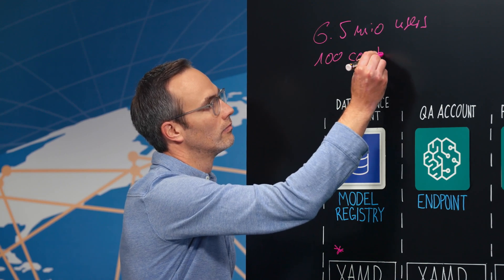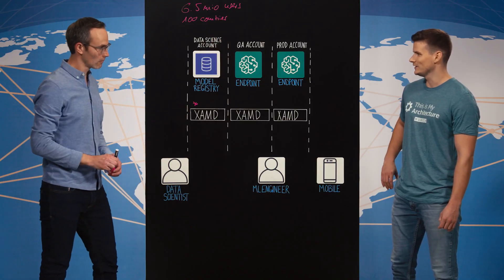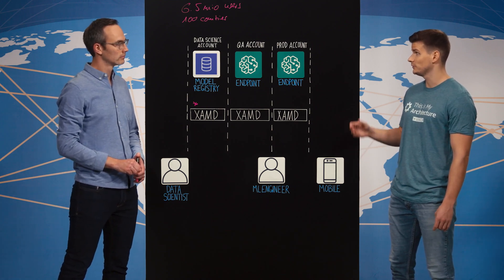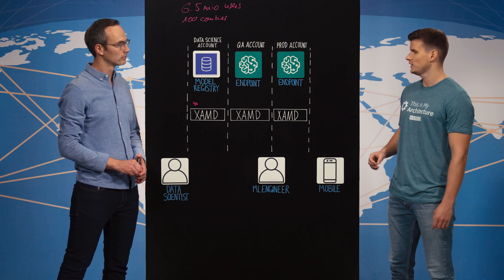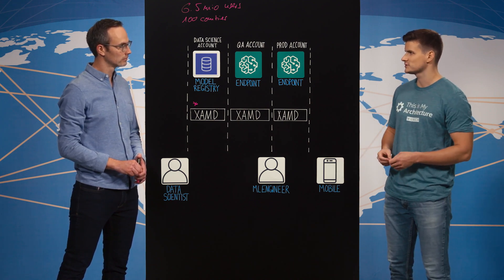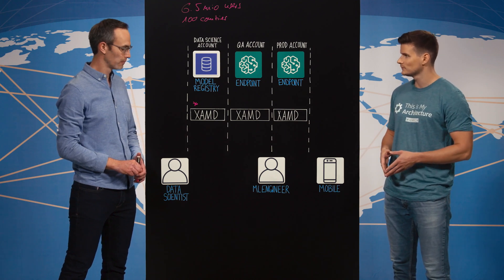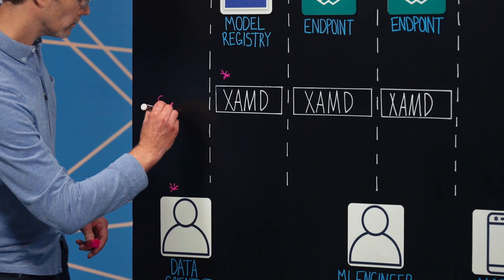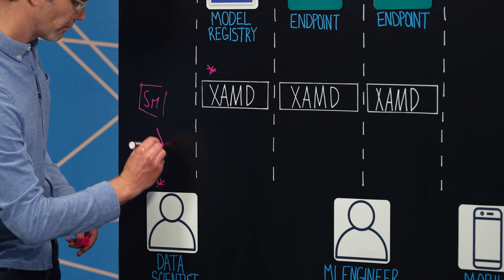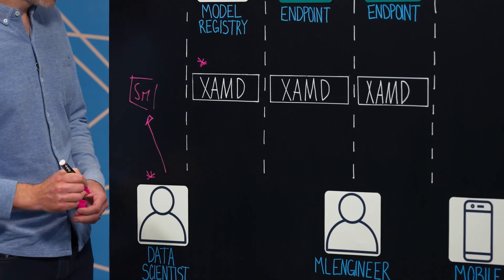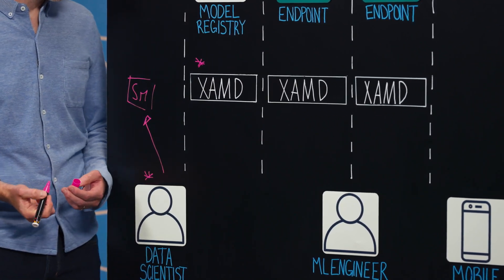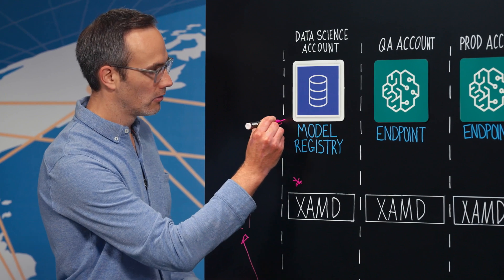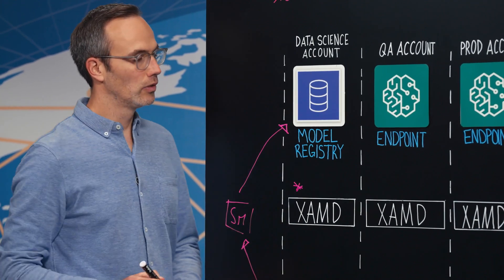That's quite the scale. When you say cross-account model deployment, we're talking about machine learning — you use machine learning to build these applications for your customers. Our data scientists use SageMaker to create ML models. These models are then done in automated pipelines that register a model into the SageMaker model registry.